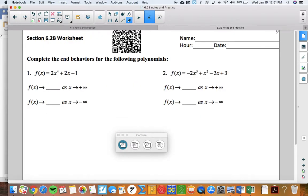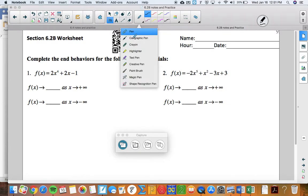Heyo folks, this is 6.2b, talking about end behaviors of polynomials, and it would be helpful to have your notes out for this part as well, as always.